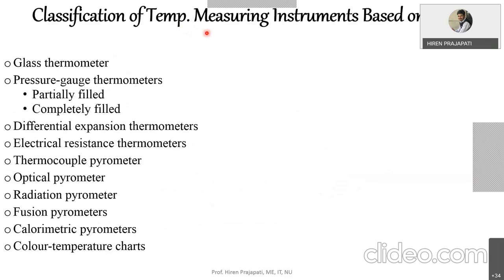Classification of temperature measuring instruments based on ASME includes: simple glass thermometer, pressure gauge thermometers, differential expansion thermometers, electrical resistance thermometers, thermocouple, optical pyrometer, radiation pyrometer, fusion pyrometer, calorimetric pyrometer, and color temperature charts. In our discussion, we will focus on glass thermometer, differential expansion thermometer (also called bimetallic strip), and thermocouple.